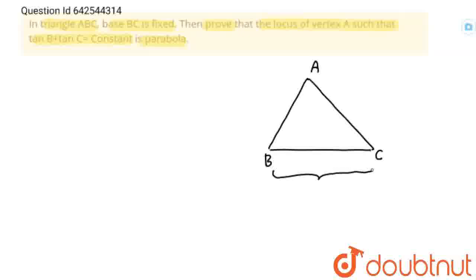And fixed lengths are fixed numbers, not variables. So because we have to find locus, variables are the main thing. So we must have to understand what are the things in that question are variable. Here, base BC is fixed. So fixed things are not variables. Now, we have to find locus of this A.